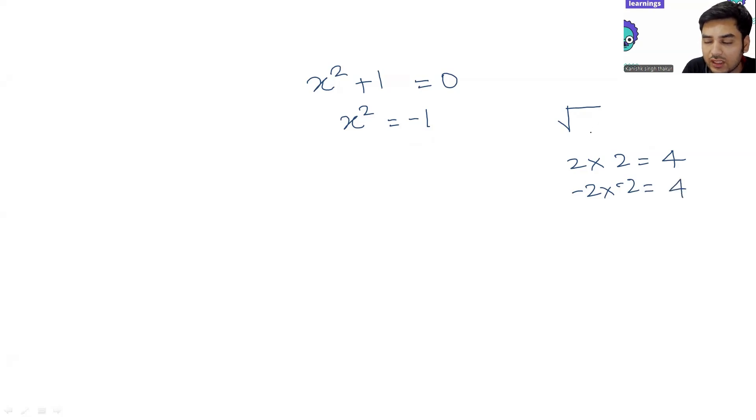So whenever you are doing square of anything, you are always getting positive numbers. You are not getting anything less than zero. But here, something squared is giving you a negative number. That is the reason why they do not come under the category of real numbers. They are imaginary numbers.